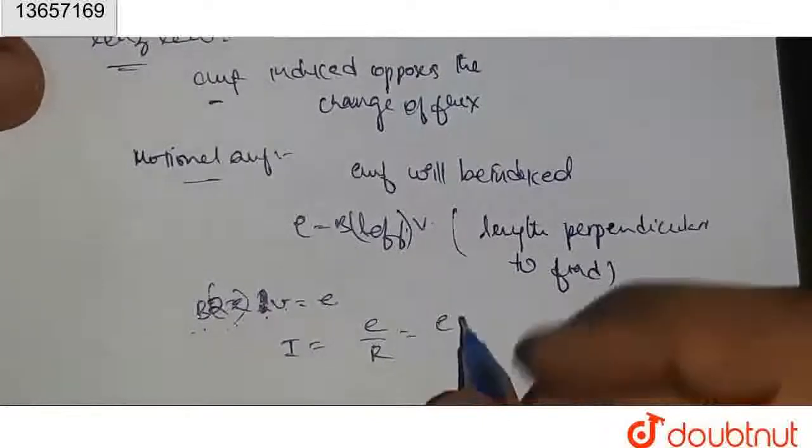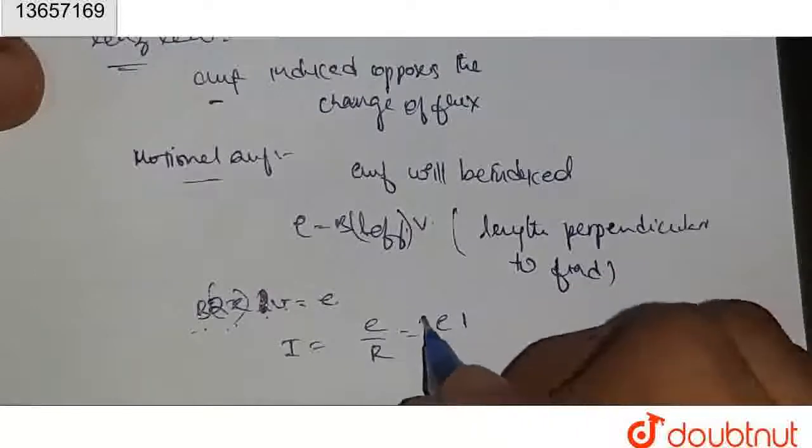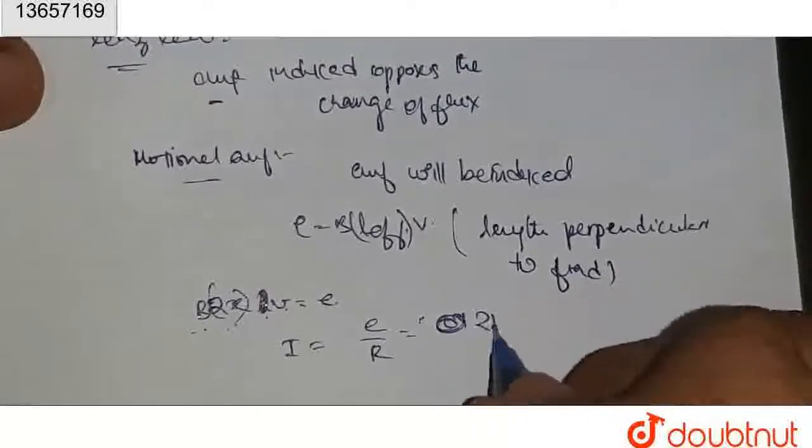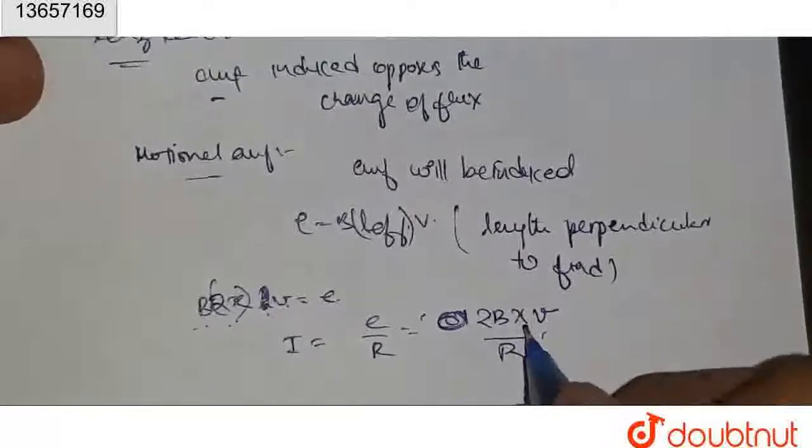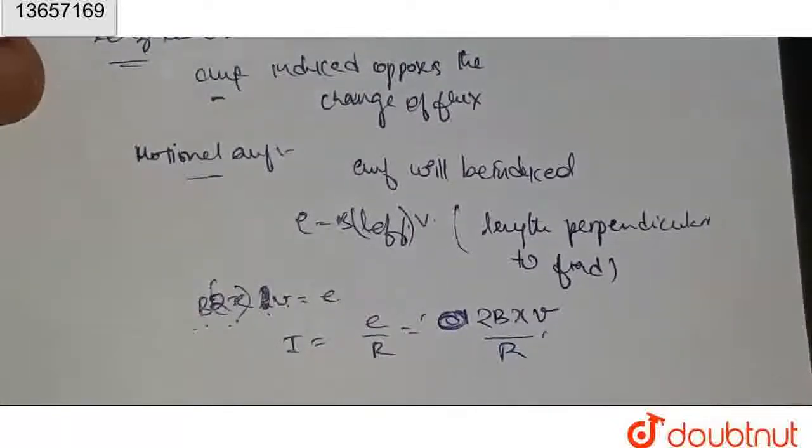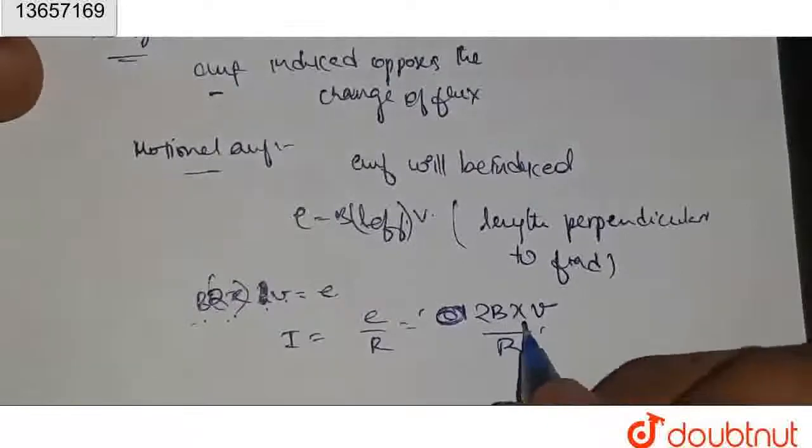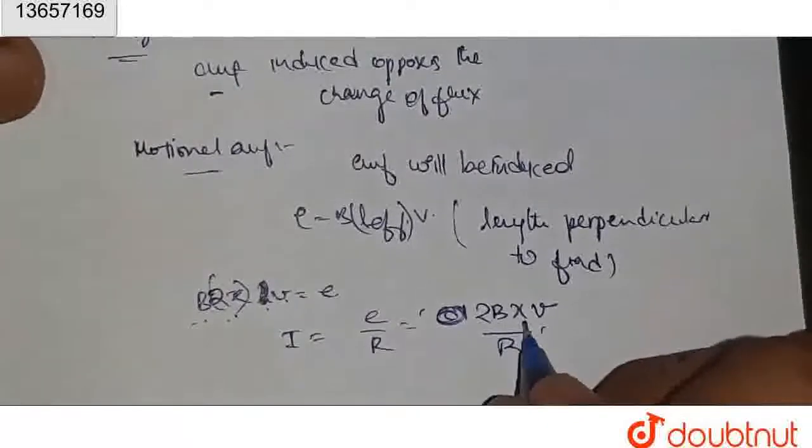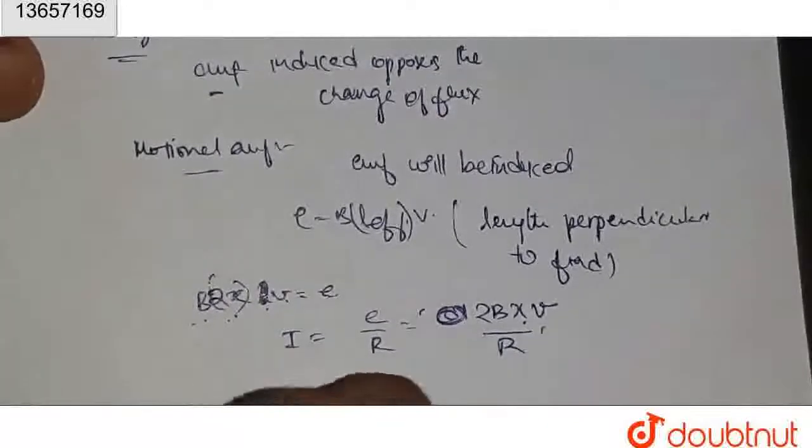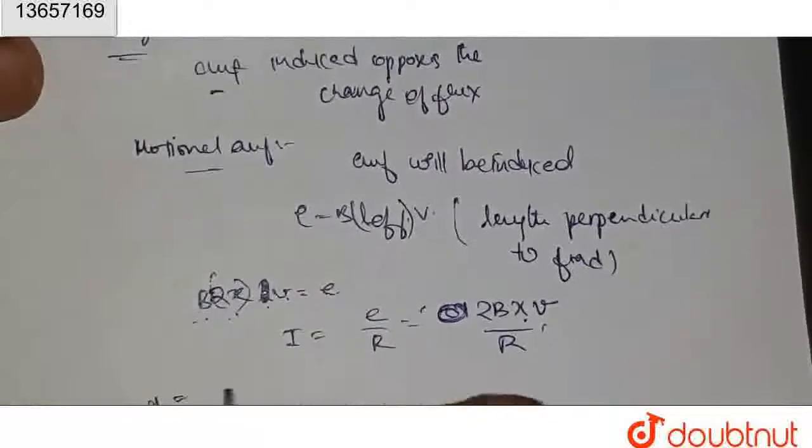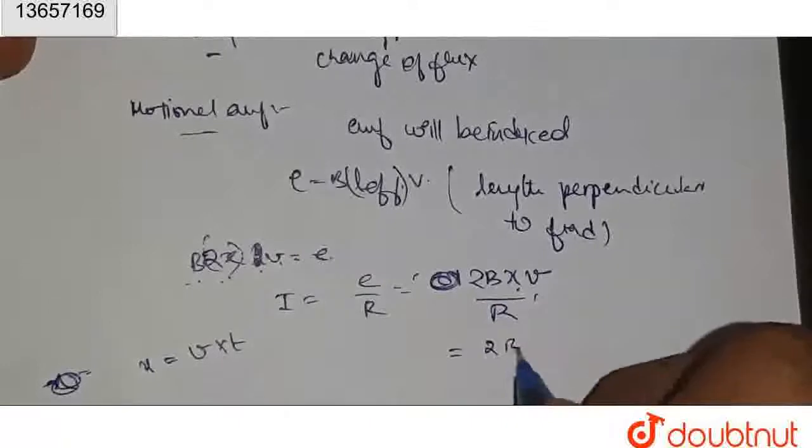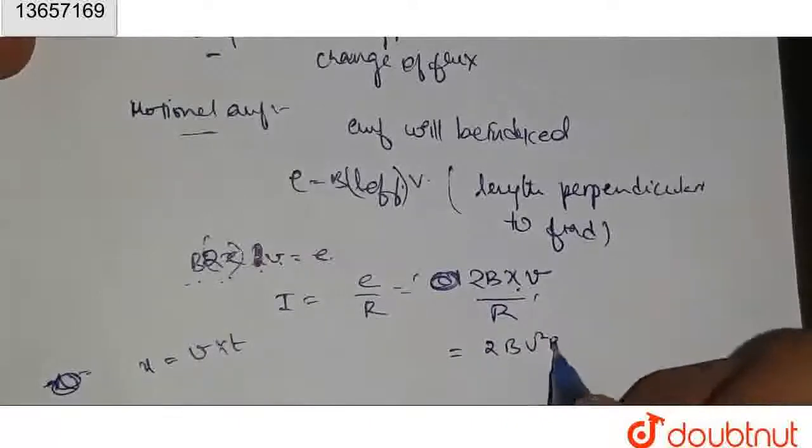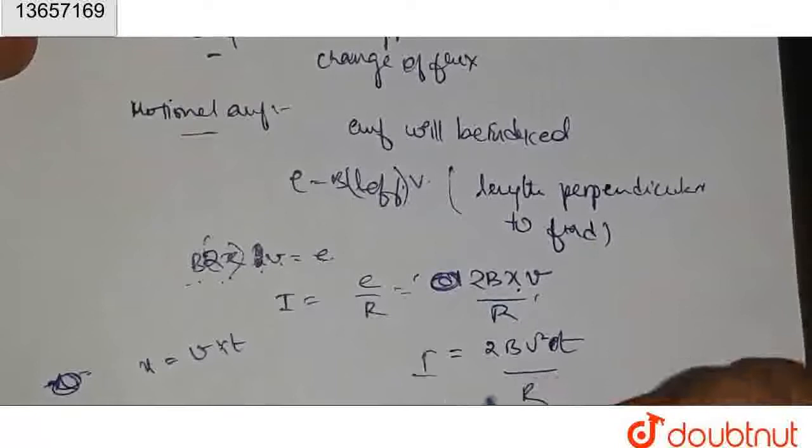This means 2B X V by R. This is our current. X means distance traveled. Distance traveled x equals velocity into time. Substituting that here,